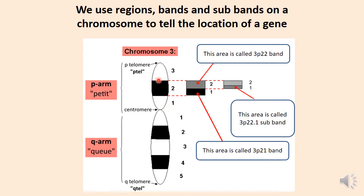If you look at these regions under higher magnification, you will see alternating light and dark areas within these regions also — they are called chromosomal bands. For example, within region 3p2, the bands are labeled as 3p21 and 3p22. If you further magnify these bands, you will see alternating light and dark areas within the bands also — they are called subbands. Within the 3p22 band, the subbands are labeled as 3p22.1 and 3p22.2.